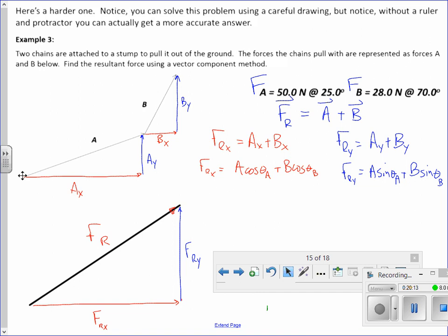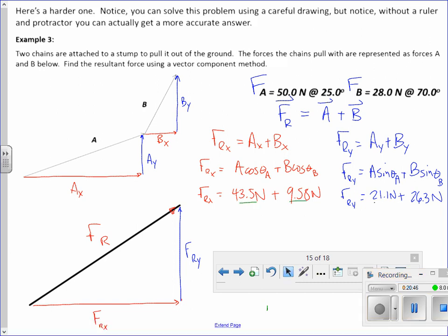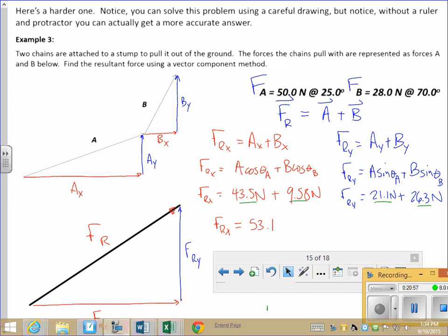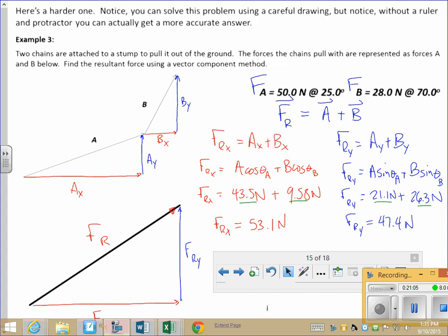Now, what you will do is calculate the numbers. AX is A cosine theta A, which is 50 cosine 25. When I come back, I'll have all these numbers here. So I calculated the components of A and B. Here's AX, BX, AY, BY. And that means we can find the resultant X component and the resultant Y component.